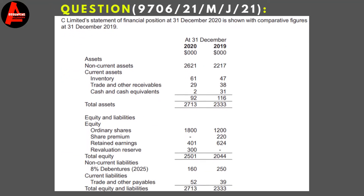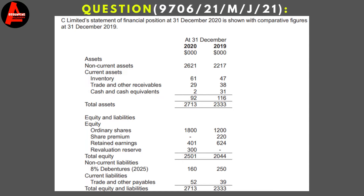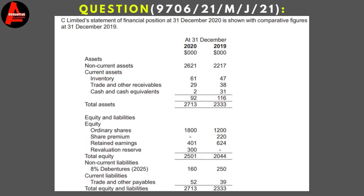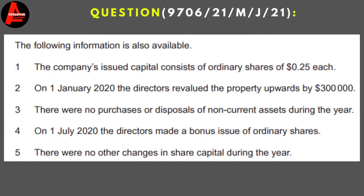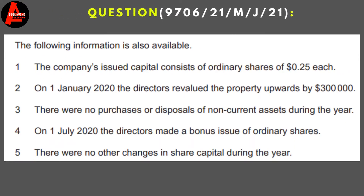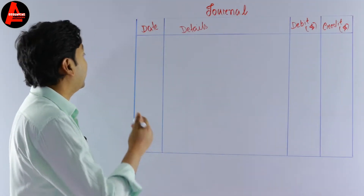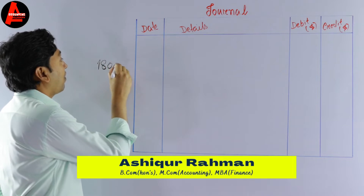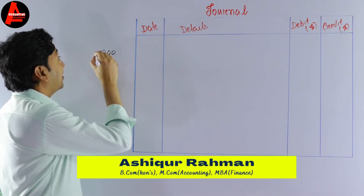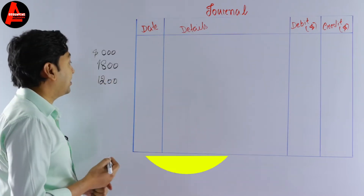Looking at the figures, we see here ordinary share capital is 1,800,000 dollars in 2020 and it was 1,200,000 dollars in 2019. And here we have adjustment number 4: on 1st July 2020 the directors made a bonus share issue of ordinary shares. And note 5 states there are no other changes in the share capital during the year.